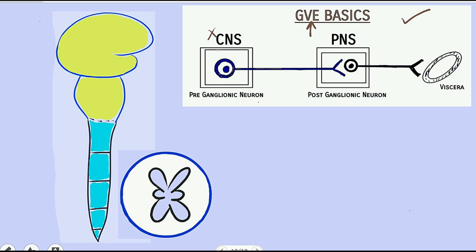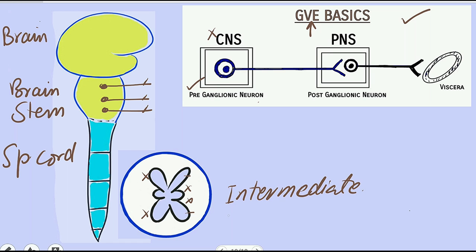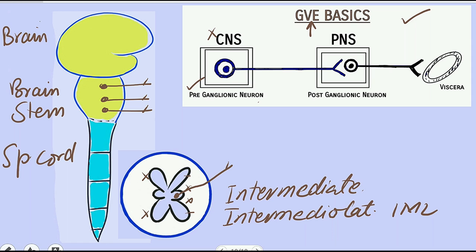Now I'll show you where in the central nervous system we have the pre-ganglionic neuronal cell bodies. The central nervous system consists of the brain and the spinal cord. In the brain, the pre-ganglionic neuronal cell bodies are present in the brainstem. In the spinal cord, neuronal cell bodies are present in the gray matter in the form of the dorsal horn and the ventral horn. For the pre-ganglionic neurons in the spinal cord, there is an extra horn present between the dorsal and ventral horns, known as the intermediate horn, or intermediolateral horn, abbreviated as IML. Here in the IML, we have the pre-ganglionic neuronal cell body, which will move out of the spinal cord.